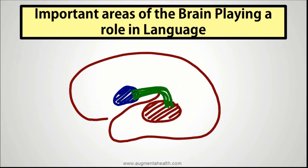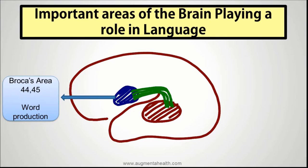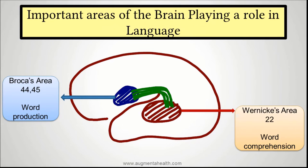Let's understand some important areas of the brain which play a role in language. There is Broca's area, area number 44 and 45, which plays a role in word production. Wernicke's area, area number 22, plays a role in word comprehension.